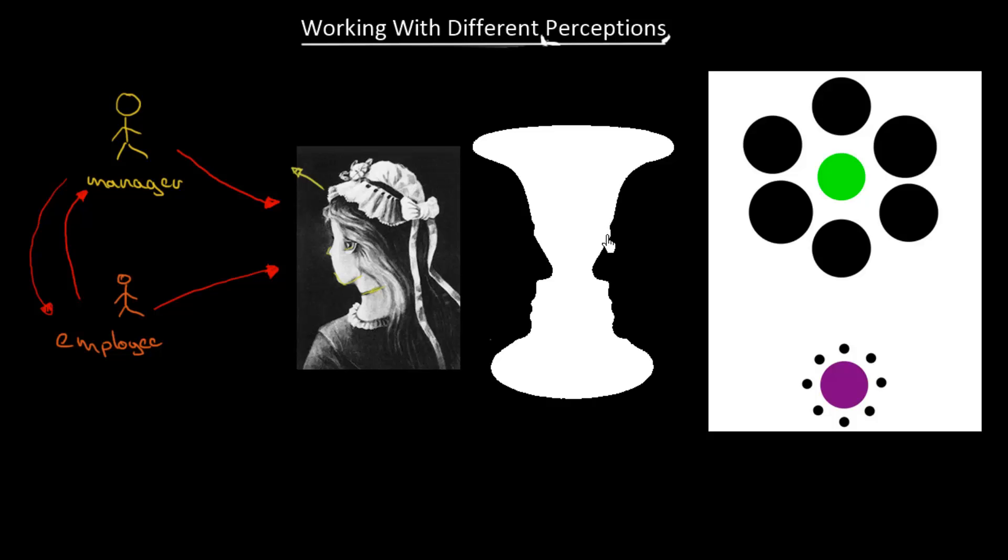Now the second optical illusion which is over here. One of us can see this as a vase. So here we have maybe it can be standing on a table and here we can put some flowers or anything. So it's a vase.